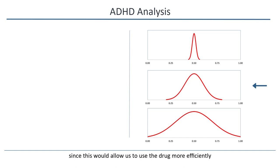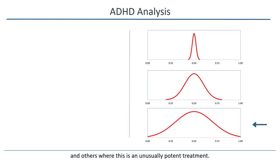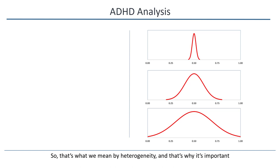Or does the distribution of effects look like this — there are some populations where the effect is virtually zero, and others where this is an unusually potent treatment? We may or may not want to start using the drug now, but would certainly initiate new research to exploit the drug's potential. So that's what we mean by heterogeneity, and that's why it's important.